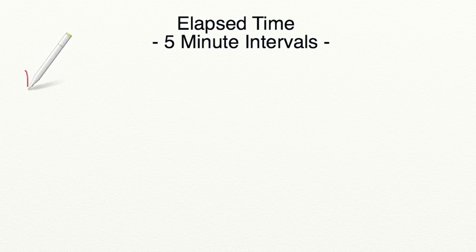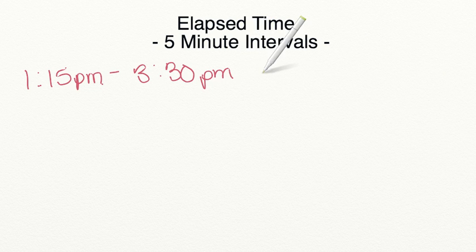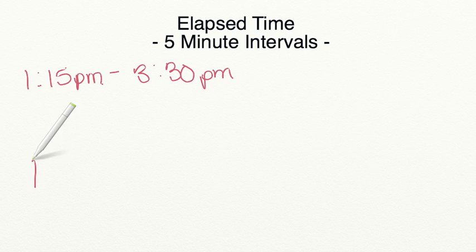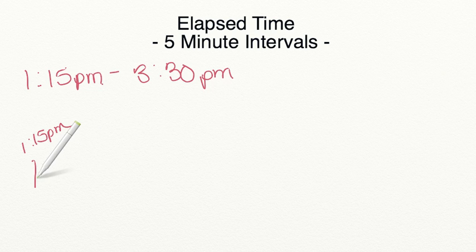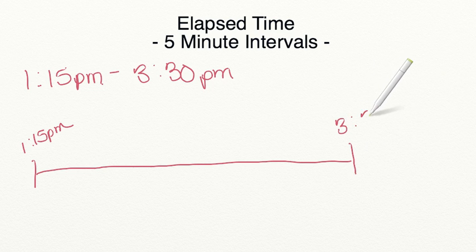We are going to begin by finding out how much time is passing between 1:15 PM all the way to 3:30 PM. We're going to start by using a number line. I'm going to make a rough sketch of a number line starting at 1:15 PM and going all the way to 3:30 PM. So 1:15 is our start time and 3:30 is our end time.